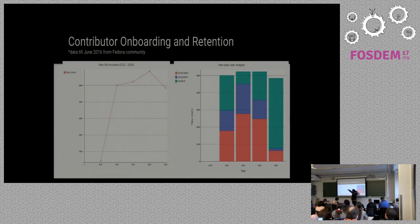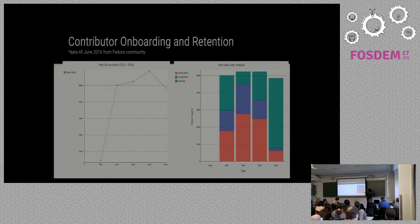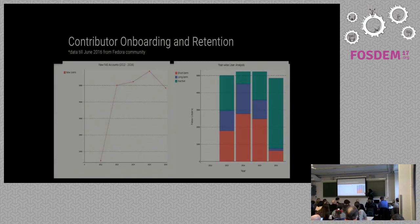This shows the number of new users who signed up for a FAS account in that year. In this graph, I have tried to analyze the users according to their contribution activity. Just before I explain anything, I want you to remember that this data is only till June 2016 and not after that, because I haven't worked on pulling data after that yet, but I'm working on it.